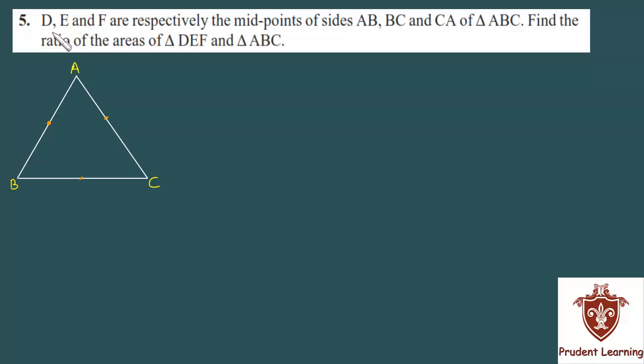5th question. D, E and F are respectively the midpoints of sides AB, BC and CA of triangle ABC.